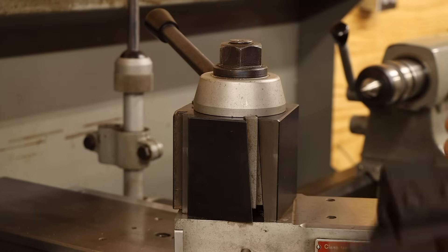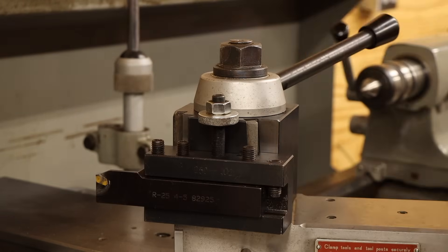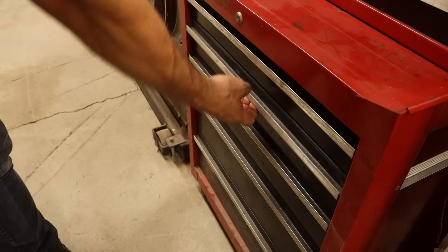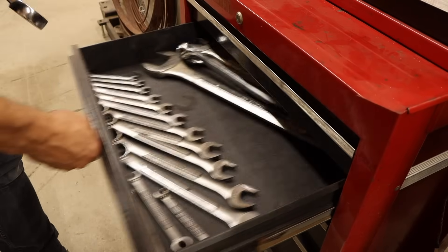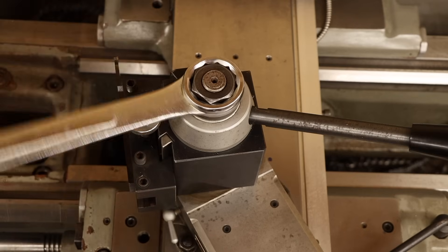This lathe has a quick change tool post, which, as the name suggests, makes changing tools super fast. Changing the angle of the tool post, however, is not so quick. The nut that locks the tool post angle requires a separate wrench just to loosen and tighten, which is a serious pain in my work boots.